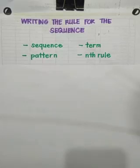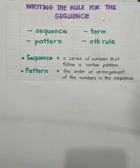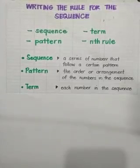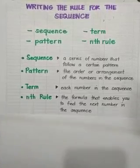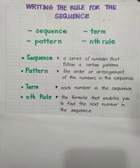Sequence, pattern, term, and nth rule. A sequence is a series of numbers that follow a certain pattern or order. It can be increasing or decreasing order. A pattern is the order or arrangement of the numbers in the sequence. The word term refers to each number found in the sequence. And when we talk about the nth rule, this is actually the formula that you're going to use to find the next number in the sequence.